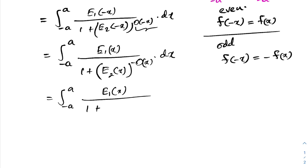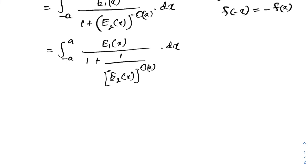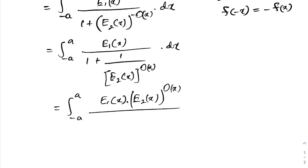We simplify the denominator: e2(x) raised to -o(x) equals 1 over e2(x)^(o(x)). Taking a common denominator gives us the integral from -a to a of e1(x) times e2(x)^(o(x)), over e2(x)^(o(x)) plus 1, dx. This integral also equals I.